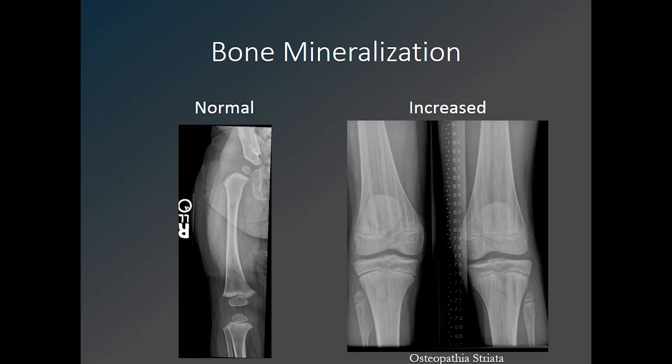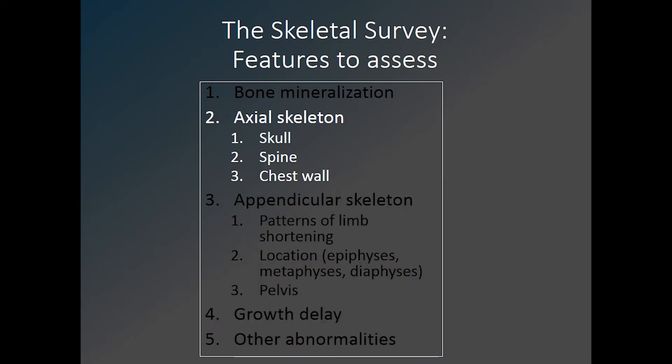Other disorders of increased bone mineralization can be seen with the sclerosing bone dysplasias, such as osteopoikilosis, melorheostosis, or osteopathia striata, as in this patient. Next, we will move on to an assessment of the axial skeleton, including the skull, spine, and chest wall.